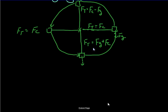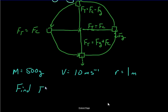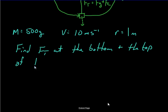So mathematically, it's actually quite straightforward. What we'll do is we'll deal with the bottom first, and let's put some numbers in here. Let's say you have a mass equal to 500 grams. Let's say you have a velocity equal to 10 meters per second. That's probably pretty fast. And let's say we have a radius of one meter. And you get asked this: Find ft at the bottom and the top of the circle.